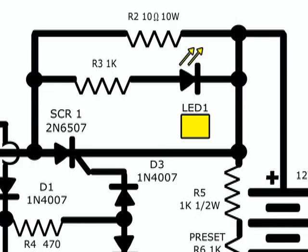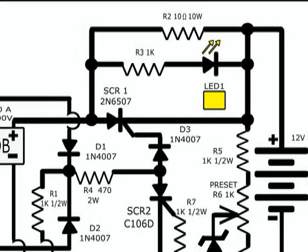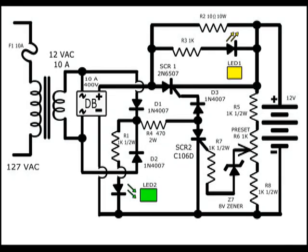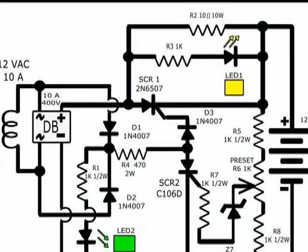by resistor R2. As long as the battery stays at floating voltage, the current supplied by the charger is limited by resistor R2. When this happens,